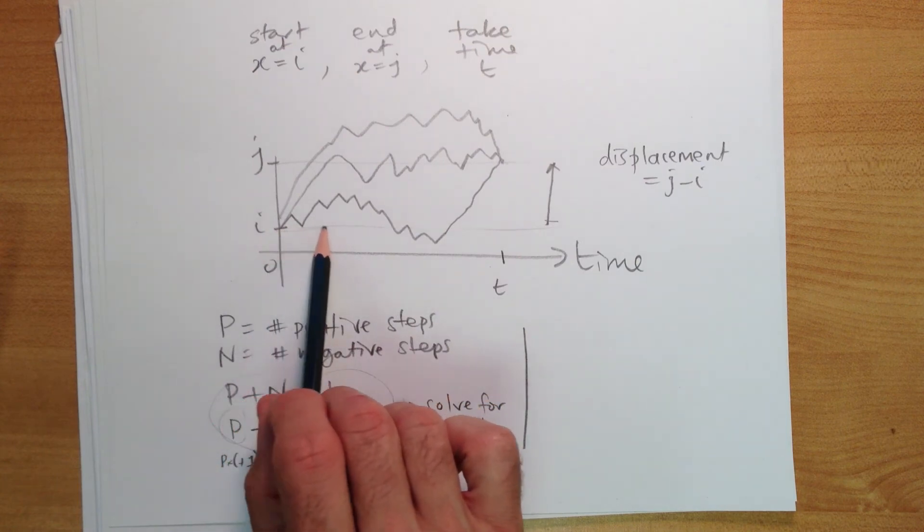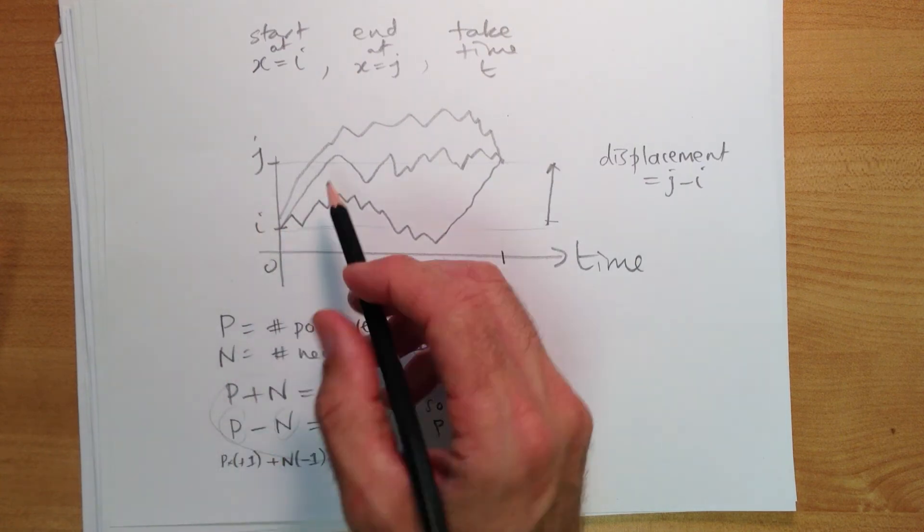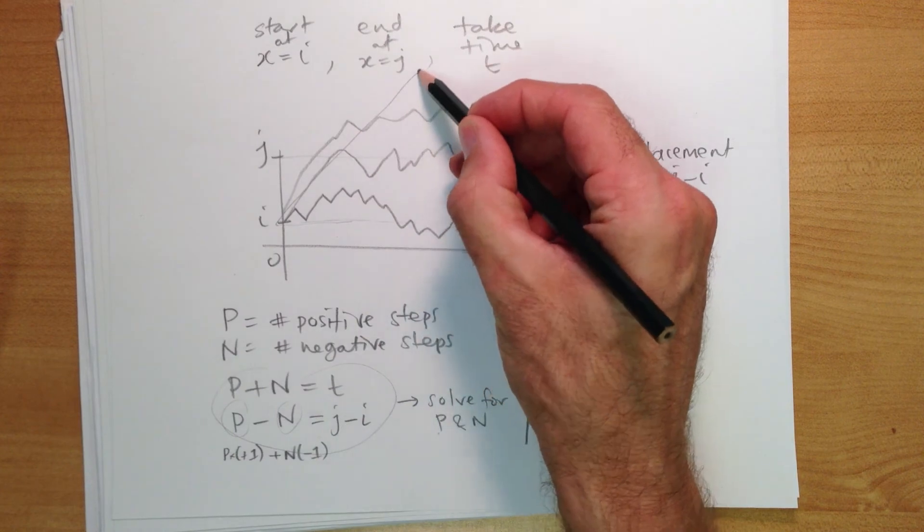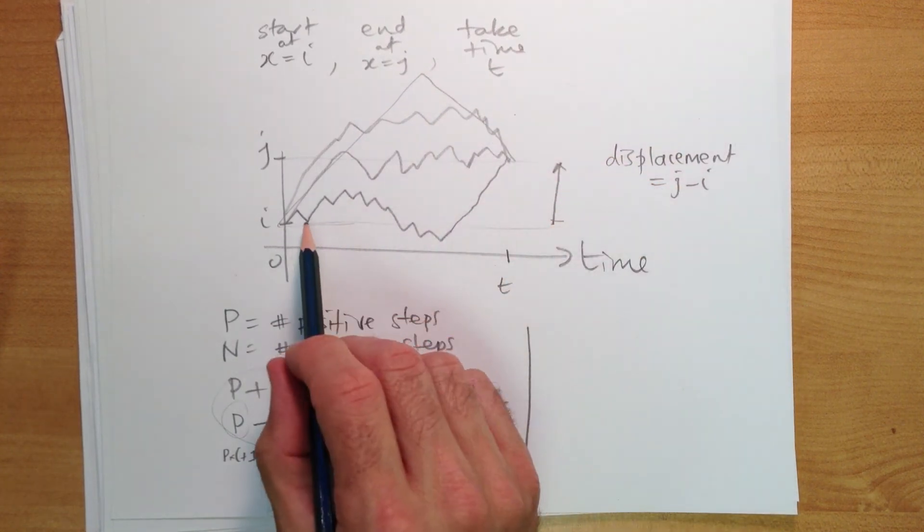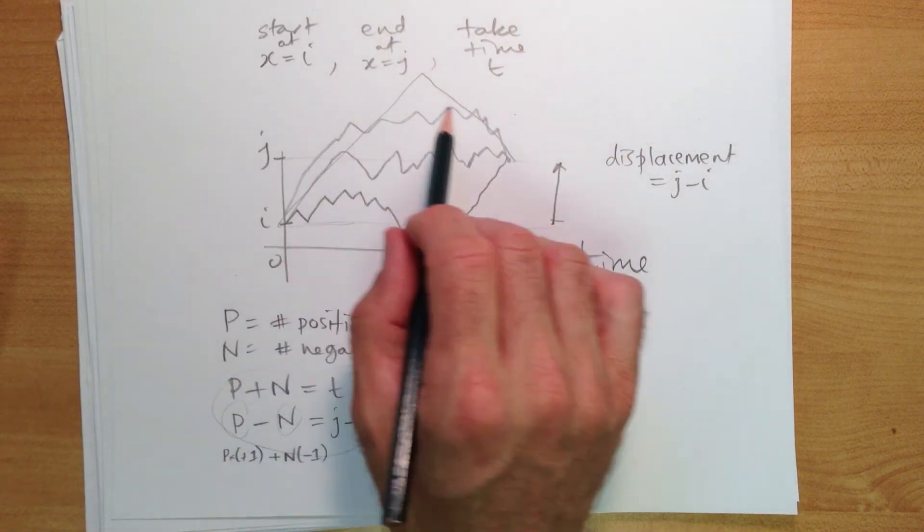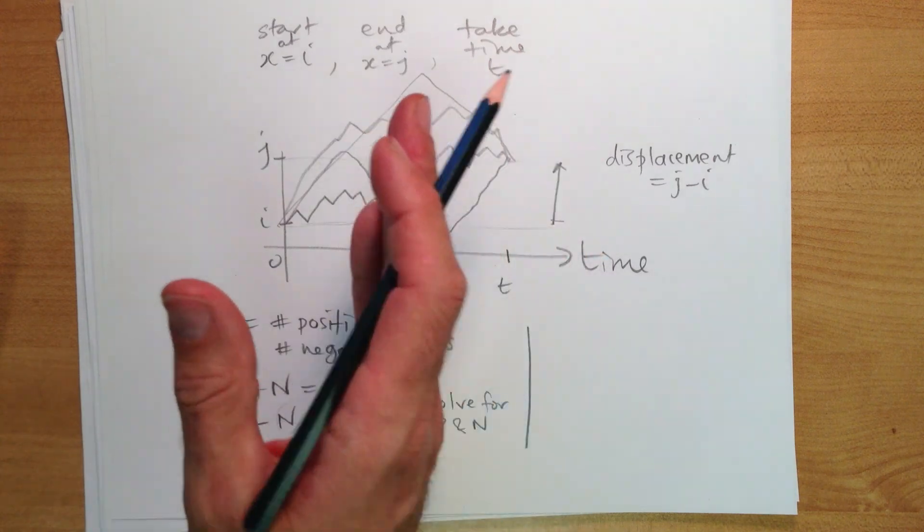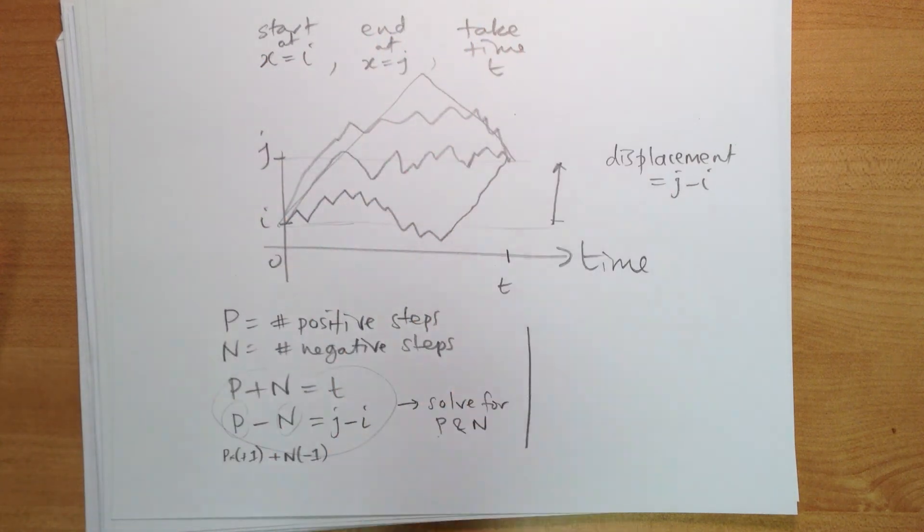Those positive steps could be all to start with, all positive and then all negative, or it could be at the end, or in all sorts of ways. So we have to choose the slots where we put the positive ones.